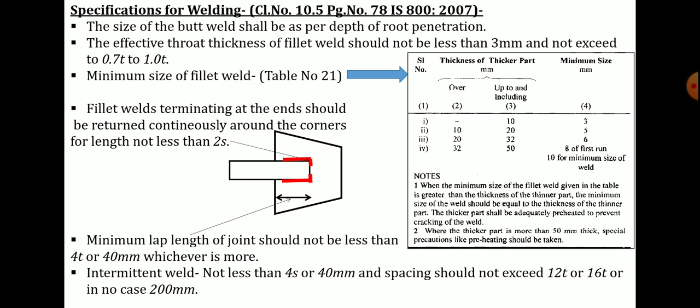Specifications of welding are given as per clause 10.5, page 78 of IS 800-2007. The size of butt weld depends on the depth of penetration — whether the groove is provided for the entire thickness or partially, such as single V, double V, single U, or square type joints. The effective throat thickness of fillet weld should not be less than 3 mm and not exceed 0.7 times T, where T is the thickness of the thinner part. Maximum size of fillet weld is given as per Table 21 of IS 800-2007, with thickness ranges of 0–10, 10–20, 20–32, and 32–50 mm; minimum weld size is 3 mm. Based on the thickness of the thicker part, you decide the weld size.